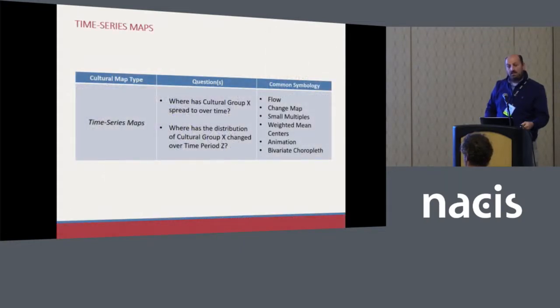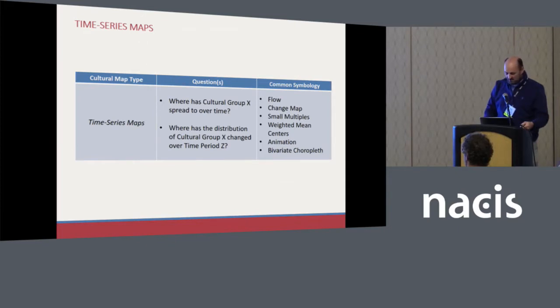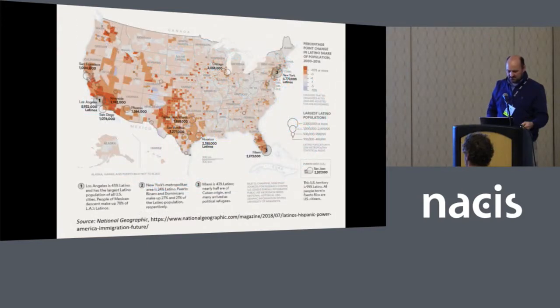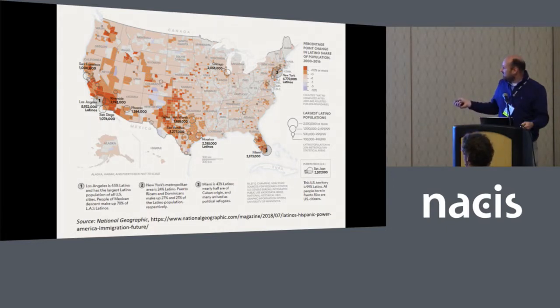Time series maps address where a cultural group has spread over time, thinking of diffusion and the process of diffusion, and also looking at distributions that have changed between two different time periods. Common temporal symbology includes flow maps, small multiples, animation, and bivariate choropleth maps. Here's a flow map looking at the diffusion of French, Portuguese, and Spanish from a textbook. This National Geographic map looks at change in the Latino population from 2000 to 2016, using a diverging color scheme to show where that population has increased and where it has not.